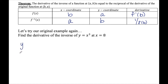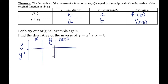I'm going to set up a table with rows for y (the original function) and y inverse, with column headers x, y, and derivative. I'm looking for the value of the inverse of y at x equals 8. If the x-coordinate of the inverse is 8, then the y-coordinate of the original is 8. I need to find the derivative of the original, but first I don't know what the x value is, so I need to find that.